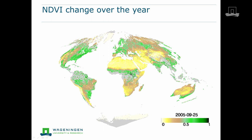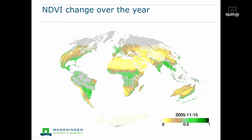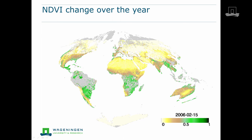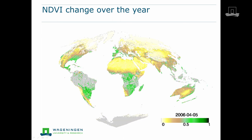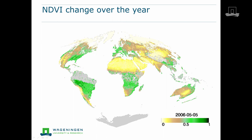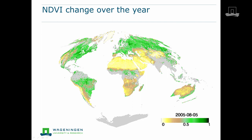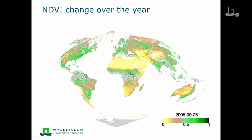Here we see an example of the yearly change of the Normalized Difference Vegetation Index, or NDVI, at a global scale. Looking at Europe for instance, we see green tones in summer meaning high index values and lots of green vegetation. Towards the end of the year, tones get more greyish with low index values in winter. Then in spring, Europe starts to green up again because of increasing amounts of green vegetation.